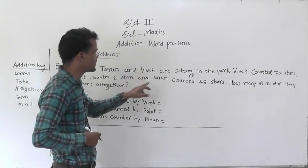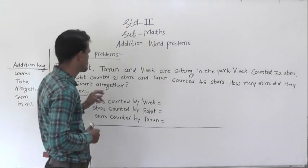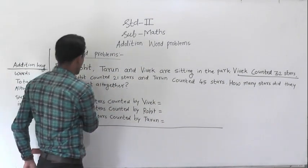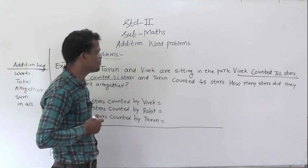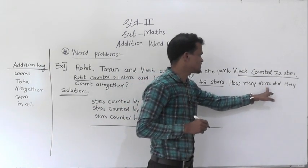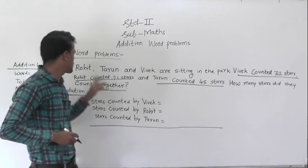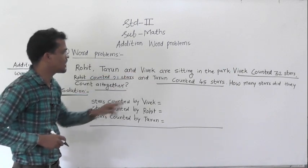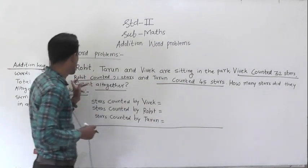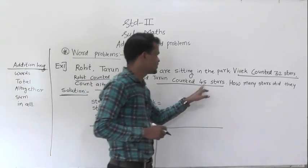Rohit, Tarun, and Vivek are sitting in the park. Vivek counted 32 stars, Rohit counted 21 stars, and Tarun counted 45 stars. How many stars did they count altogether? Let's read the question once again: Vivek counted 32 stars, Rohit counted 21 stars, and Tarun counted 45 stars.